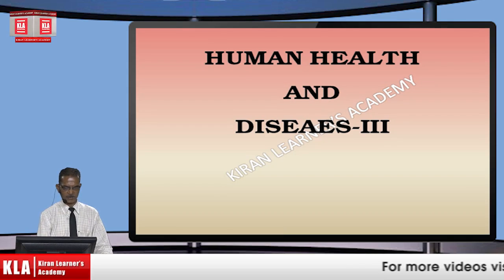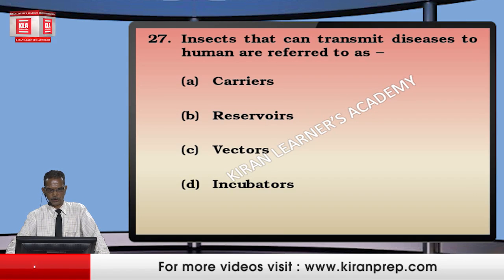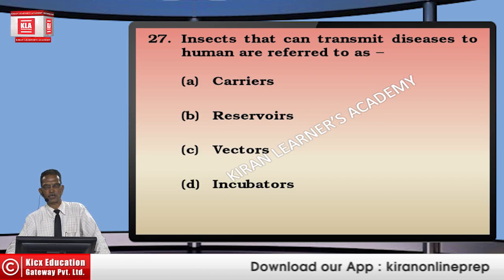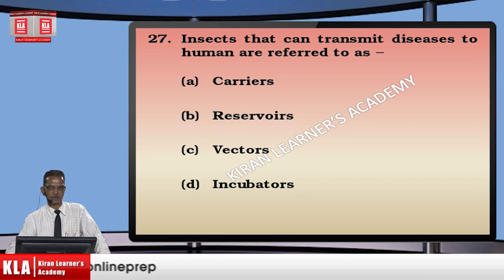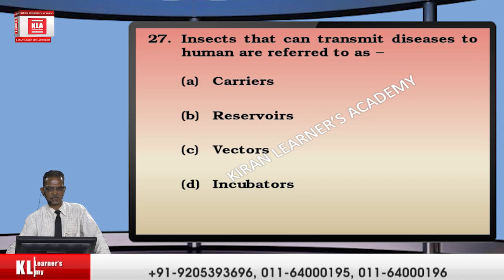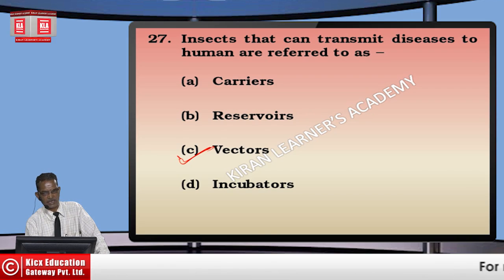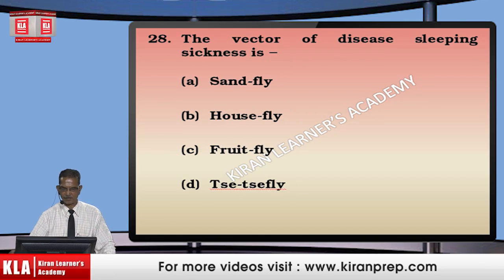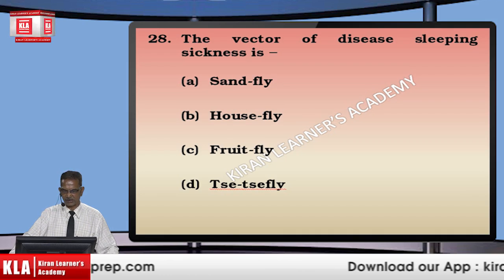Students, let's proceed with the next set of questions. Insects that can transmit diseases to humans are referred to as vectors. It's not only insects — in the case of rabies, bats are the ones transmitting the disease. All these carriers of disease — whether insects or animals — which carry the disease from an infected to a healthy person are called vectors.